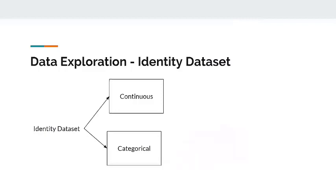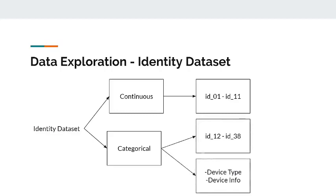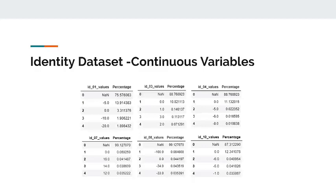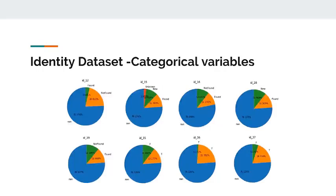For the identity dataset, we observe two different types of variables: continuous and categorical. ID 1 to 11 fall under continuous variables, while ID 12 to 38, device type, and device info fall under categorical. For continuous variables, we pick up a few columns and observe that for each column, the NaN values have the highest weightage. Similarly, for categorical variables, we display a few columns in pie chart form and observe that NaN values also have the highest weightage.